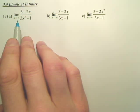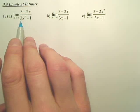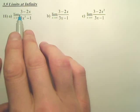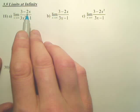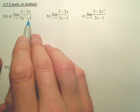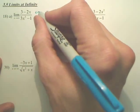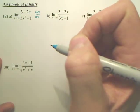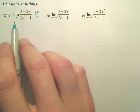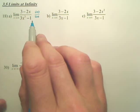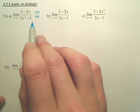Limits at infinity. When we plug in infinity, we get infinity over infinity. We get 3 minus infinity — that's still infinity — and infinity minus 3 minus 1. You get infinity over infinity, which is indeterminate. So in order to find the limit as it approaches infinity, we divide each piece by the highest degree in the denominator.